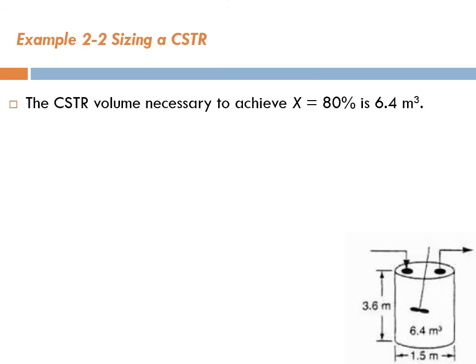The CSTR volume necessary to achieve 80% conversion is 6.4 cubic meters, and this is represented by this reactor. If we take a tank which is 1.5 meters in diameter and the height of around 3.6 meters, the diameter is about the height of you or a little bit smaller, and the height of the tank is around the height of the ceiling. This is the volume of the CSTR that is required to achieve 80% conversion.